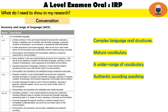You get further marks for your accuracy and range of language. This is an A-level exam — it's supposed to be as academic as you can make it. They want complex language and structures, mature academic vocabulary, a wide range of that vocabulary, and they want you to sound authentic. Pronunciation and intonation have to be authentic sounding — that's all down to practice. Every week I'll be giving you some key vocabulary to learn to help you develop your speaking, because this is a different type of speaking — like an academic presentation. Between now and your exam, you can do work every week towards that.